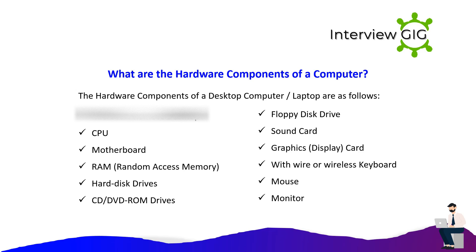What are the hardware components of a computer? The hardware components of a desktop or laptop computer are as follows: CPU, motherboard, RAM (random access memory), hard disk drives, CD/DVD ROM drives, floppy disk drive, sound card, graphics/display card, wired or wireless keyboard, mouse, and monitor.